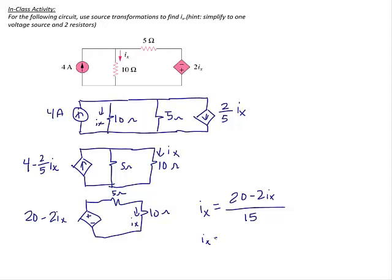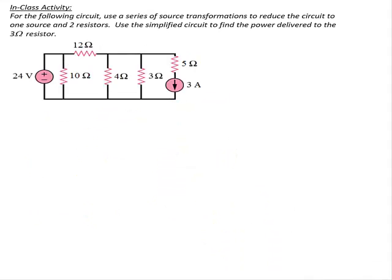Using KVL: IX equals the voltage source 20 minus 2IX divided by the sum of the resistors, which is 15. Solving this equation gives me IX equal to 20 over 17 amps. This concludes an example of how to use source transformations to solve for a value in a circuit with a dependent source.